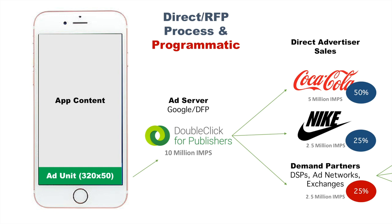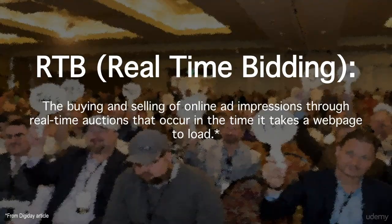That is a general explanation of programmatic, how it differs from a direct buy, and how it actually works together in the real world. Now, that process of filling those ad units takes place through a process called RTB, or real-time bidding.